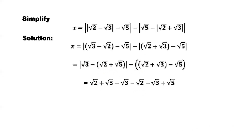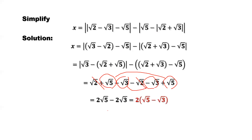So let me mark it. We have negative square root of 2 here. We have negative here. And here it's 1 square root of 5, and here's another one square root of 5 — we can put them together, that's 2. So negative square root of 3 and negative square root of 3, we can put them together. Then get the answer: 2 square root of 5 minus 2 square root of 3. We can factor 2 out — that's 2 times square root of 5 minus square root of 3.